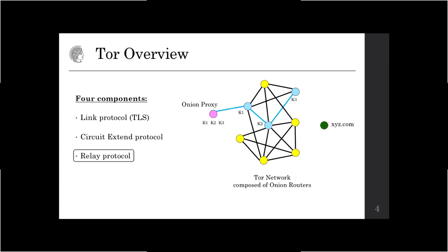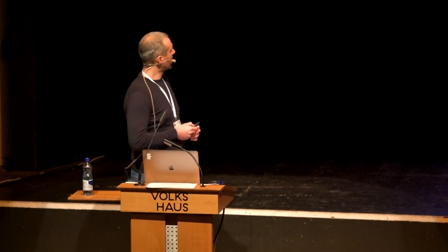On top of the relay protocol is the stream protocol, which can be used by the onion proxy to instruct the last node in the circuit to connect to xyz.com — for example, to establish an HTTPS connection. The stream protocol also serves to multiplex multiple streams over the circuit. Our focus, however, will be on onion encryption, and hence we'll focus only on the relay protocol.